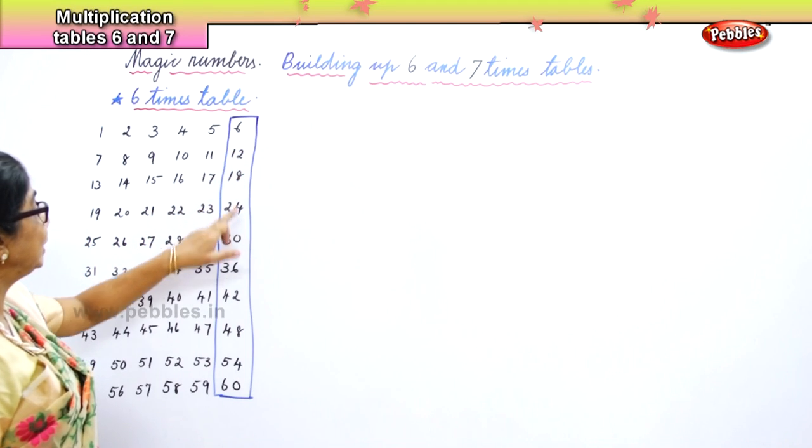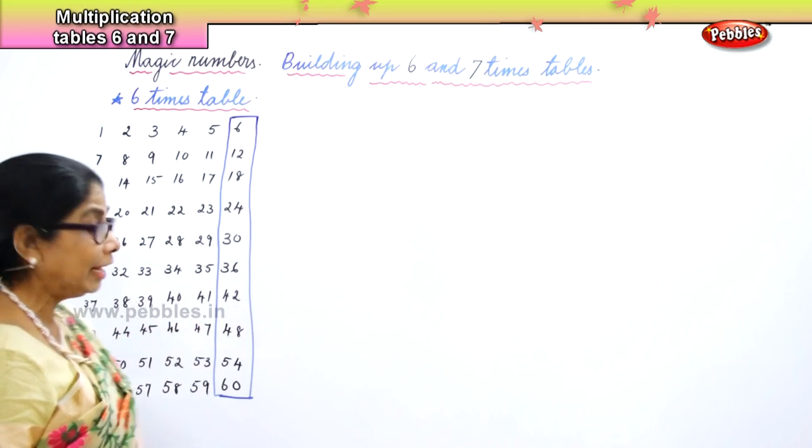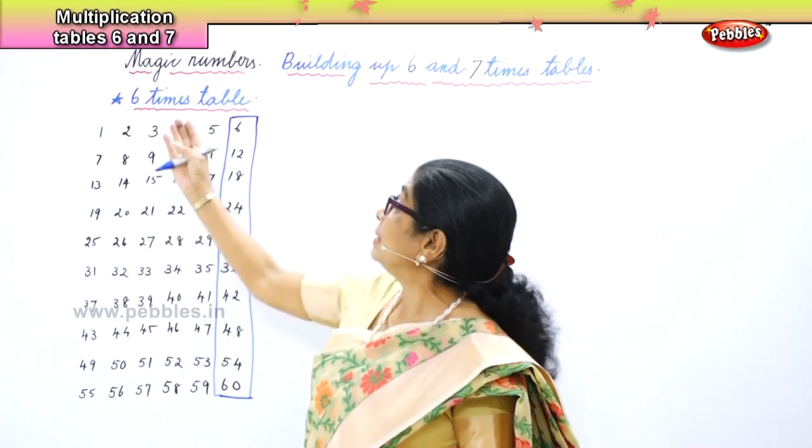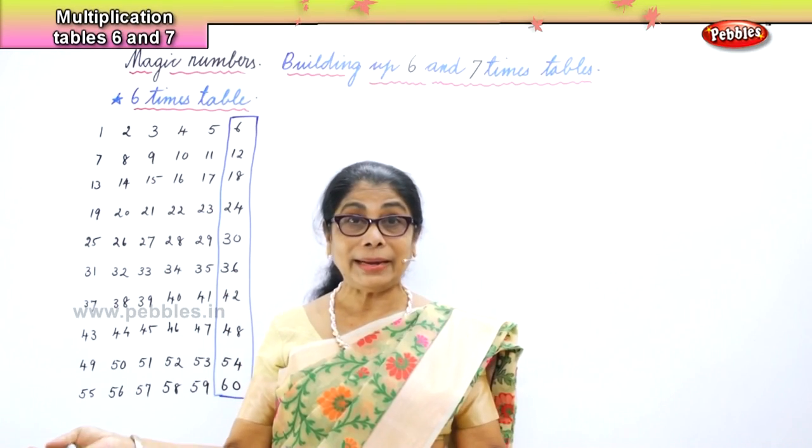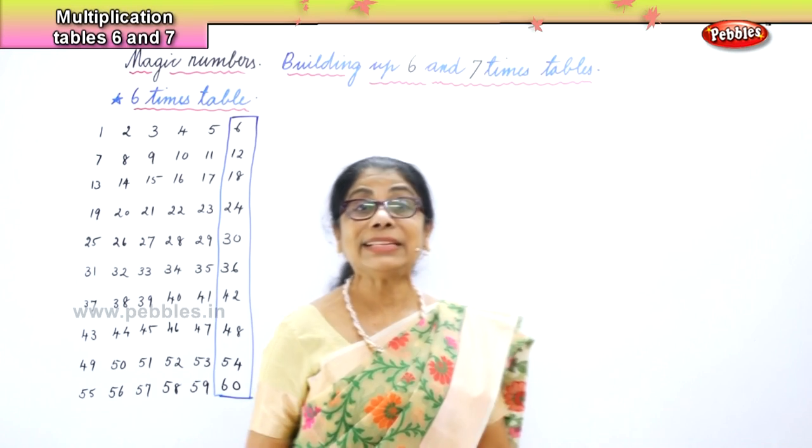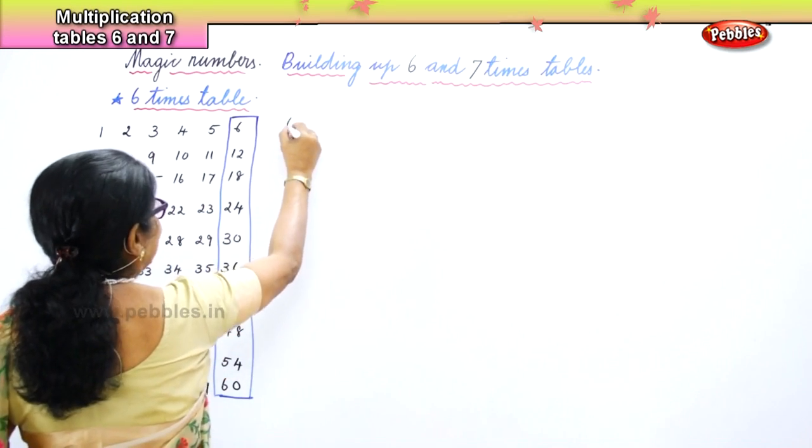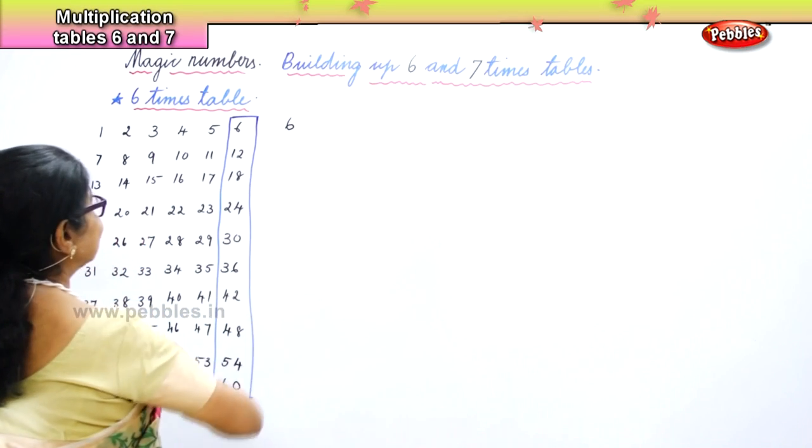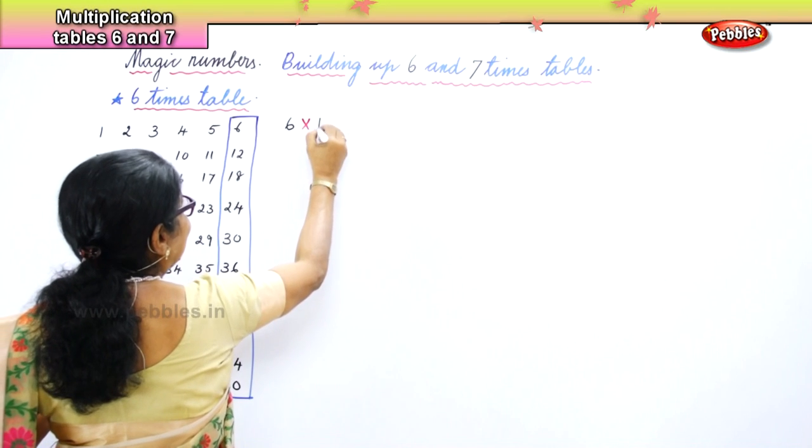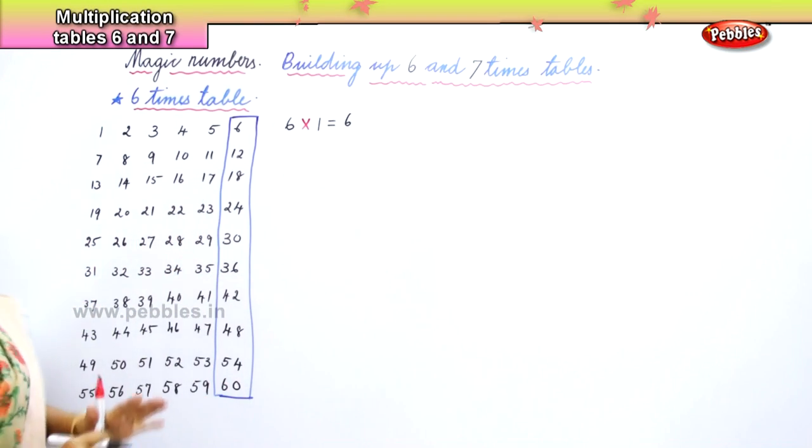Now let's read the last numbers. We have 6, 12, 18, 24, 30, 36, 42, 48, 54, and 60. And those are the 6 times tables. Now, how do we normally say 6 ones are 6? So let's do that now. That's how we build a table.